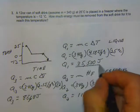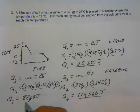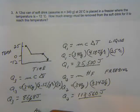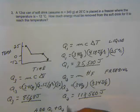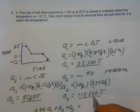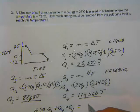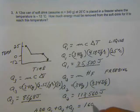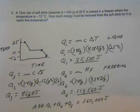We've got Q1, Q2, and Q3. Adding Q1 plus Q2 plus Q3, that comes out to approximately 160,000 joules. That's all for this one — I'll do a couple more problems on the next video, so we'll see you on the flip side.